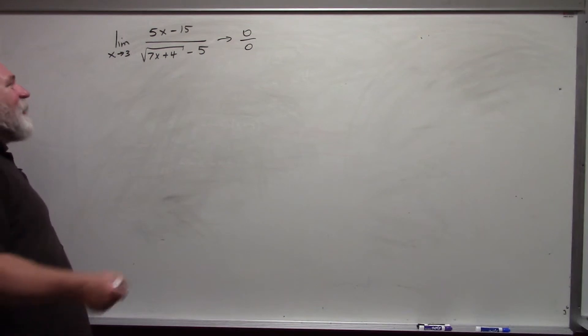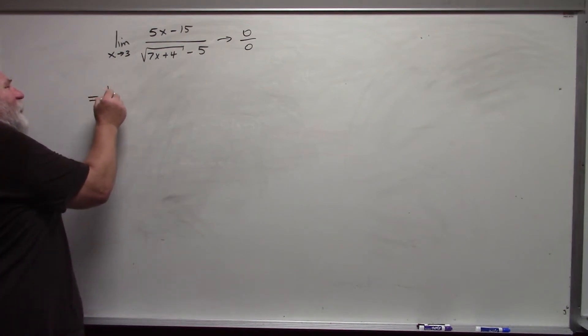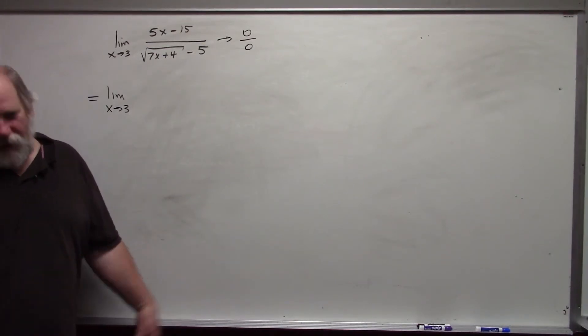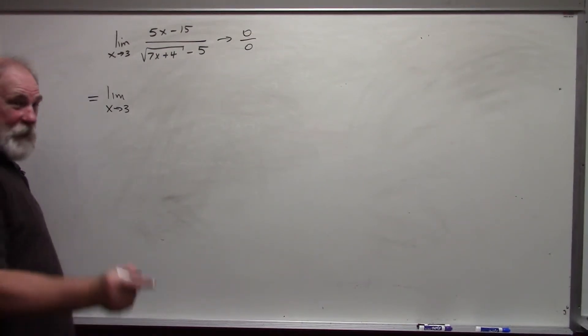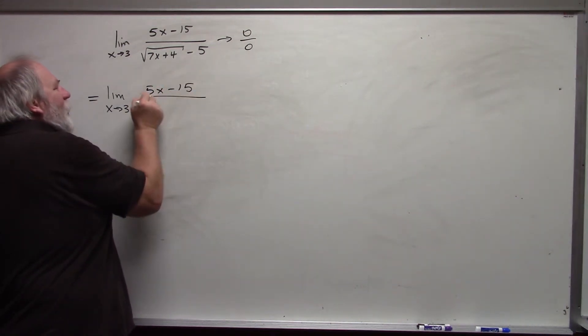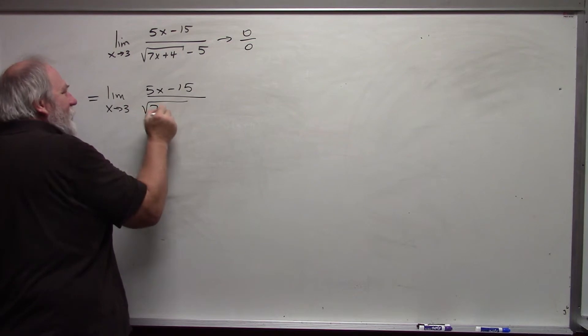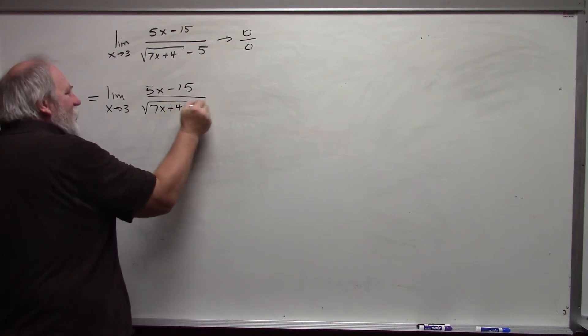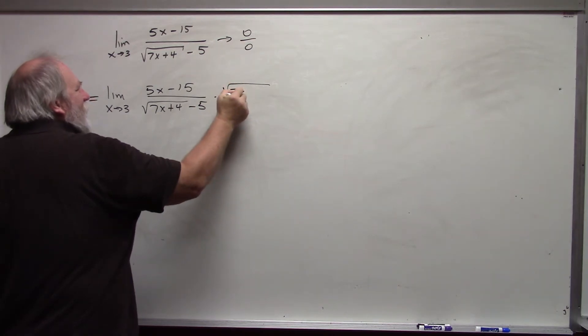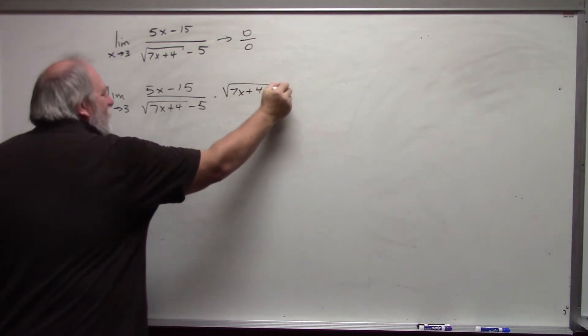In this particular case, the algebra that I need to do in order to evaluate this limit is to multiply numerator and denominator by the conjugate of the denominator. Remember doing that in algebra class? Well, now we have an actual reason for doing it. Not just that it makes things look nicer. We actually need to do this in order to figure out the value of the limit.